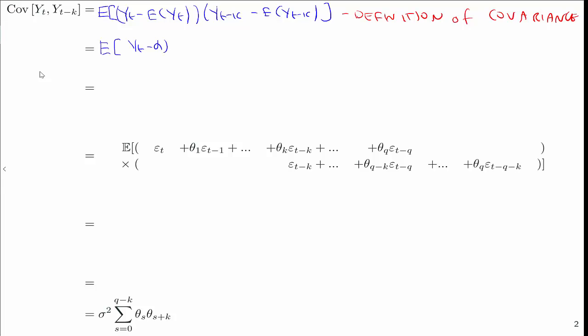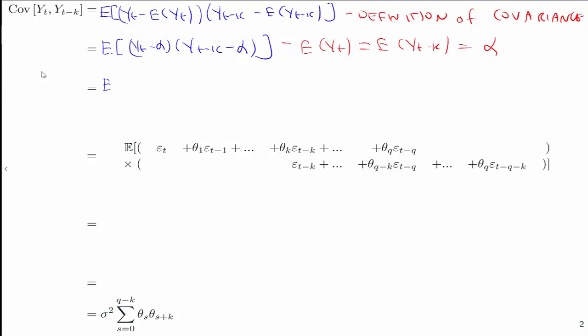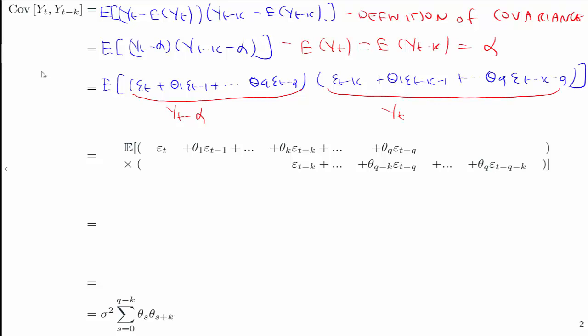We can then note that the expectation of yt and yt minus k, we derived in a previous clip, showing they were equal to alpha. So the next line notes the mean of yt and yt minus k are both alpha. We then literally just plug in yt minus alpha from the definition of the MA(q) on the previous slide. And we do the same thing for yt minus k, lagging back everything k periods, substituting in yt minus k minus alpha.